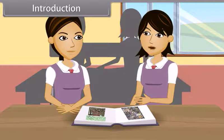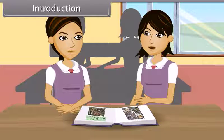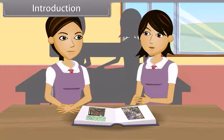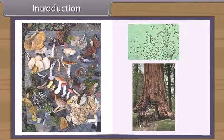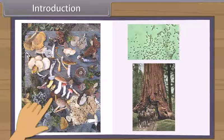We all see a wide variety of plants and animals around us. There are more than 1 million species of animals around the whole earth and about half a million species of plants on earth.